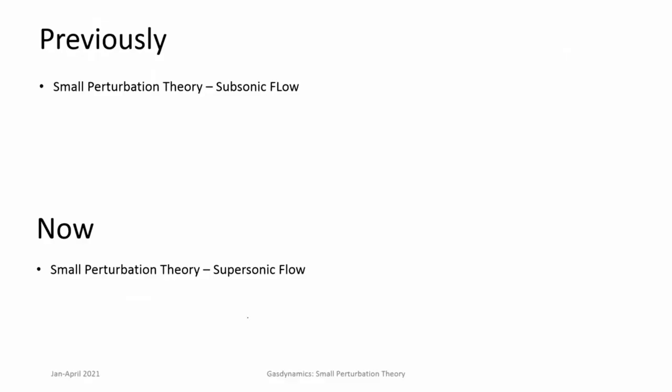We are looking at small perturbation theory, which means we are now looking at flow fields rather than integral quantities. In the previous classes we had looked at velocity potential equation and small perturbation theory applied to subsonic flows. We are dealing with inviscid irrotational flows, and therefore these flows are isentropic also. We had looked at the main steps followed to convert the velocity potential equation, which is a non-linear equation in full, to simpler linearized equations using small perturbations.